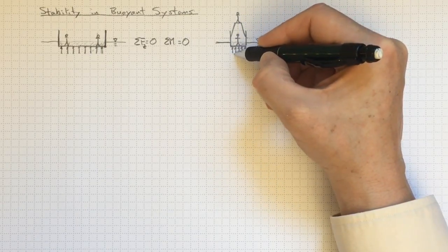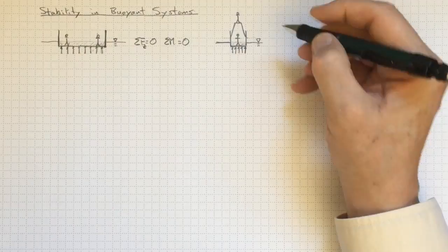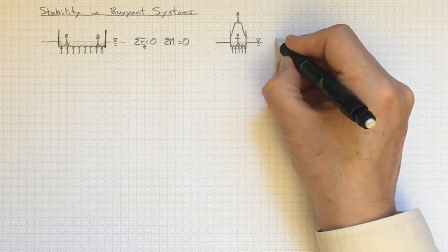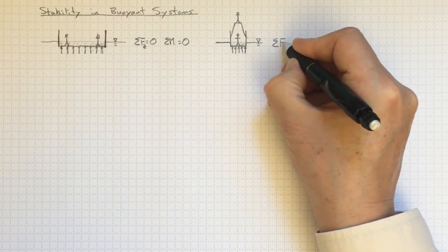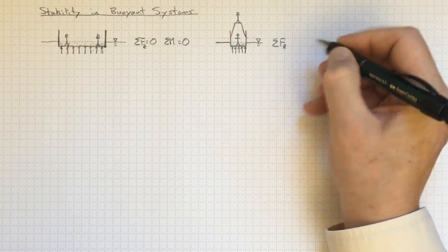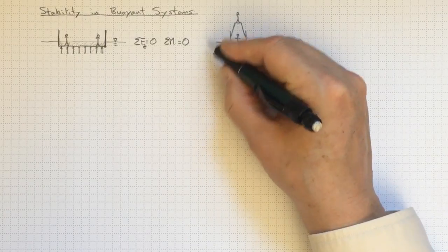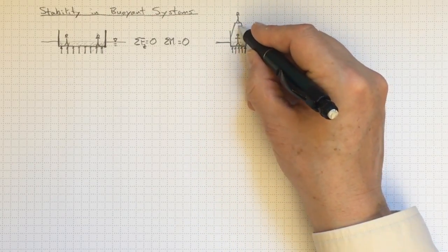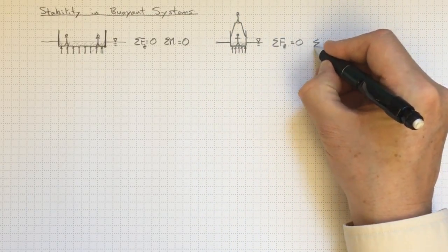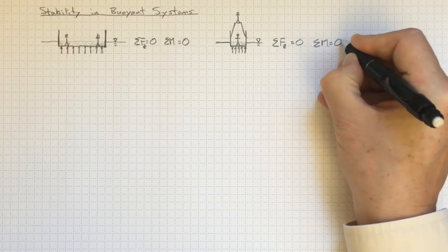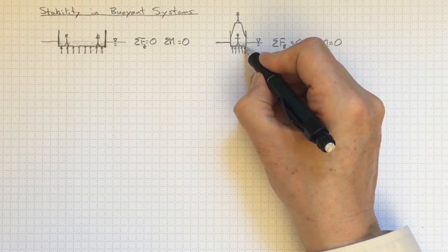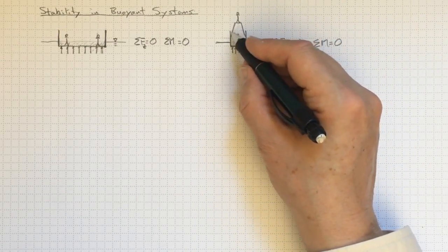So we've got gravity acting downwards and pressure forces acting upwards and they balance out so that we've got no net force in the z direction. And if we look at it we can take a moment about any location that we want and we'll find that the net moment is also zero. So that system's sitting there and it's going to float stably in that configuration.